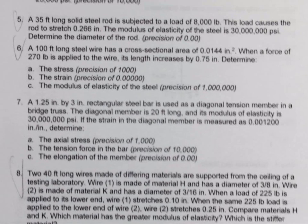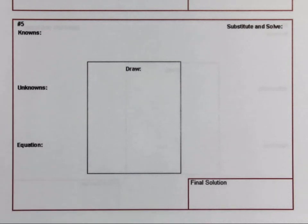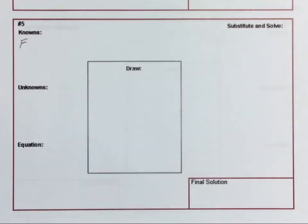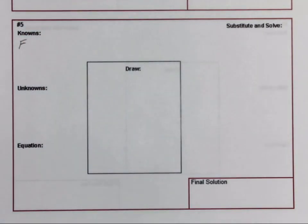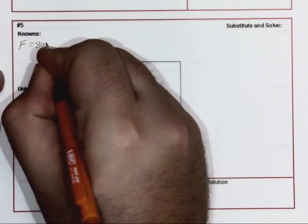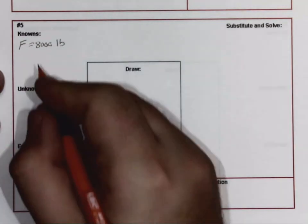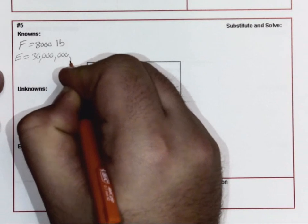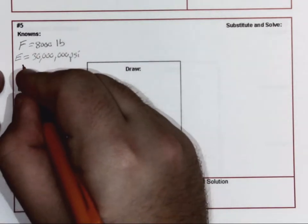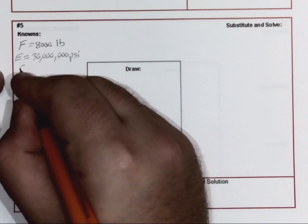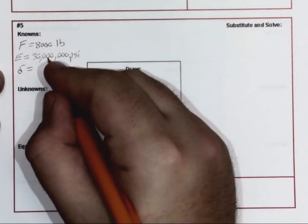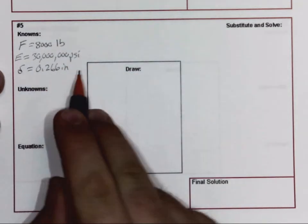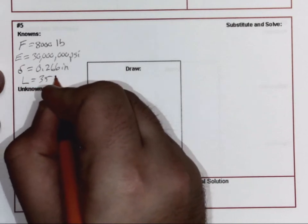As we take a look at number five, let's go ahead and start putting in what our knowns are. We know that our force is going to be set at 8,000 pounds. We know that our modulus of elasticity is 30 million PSI. This one here we're going to go into now, delta, the lowercase delta, and it's going to be the amount of stretch that happens. So 0.266 inches. The length is 35 feet.